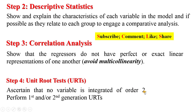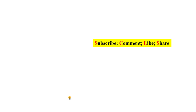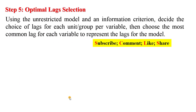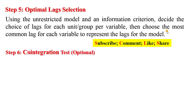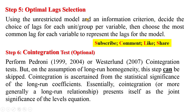Step five: determine the optimal lag for the model using the unrestricted model and any information criterion of your choosing. Decide on the lag for each group per variable, then choose the most common lag across groups for each variable to represent the model's lags. Step six, cointegration testing, is optional — you can perform the Pedroni or Westerlund test — but if you assume long-run homogeneity you can skip this, since cointegration is ascertained from the statistical significance of the long-run coefficients and the error correction term.